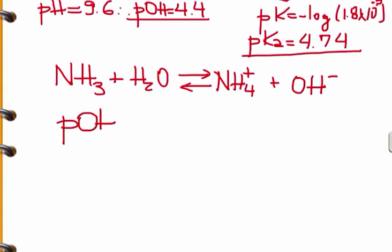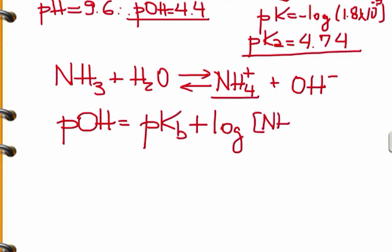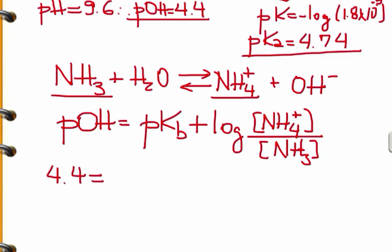Then we have the Henderson-Hasselbalch equation. pOH equals pKb plus log of [NH4+] divided by [NH3]. We have everything: the pOH and the Kb. Now we can calculate the ratio of these two.